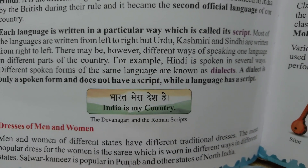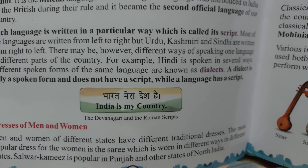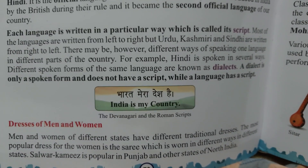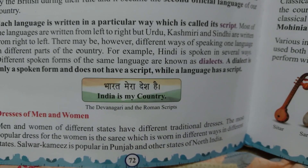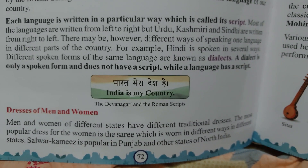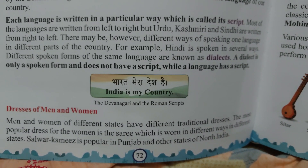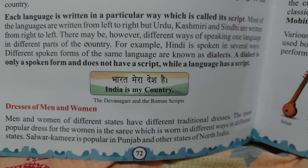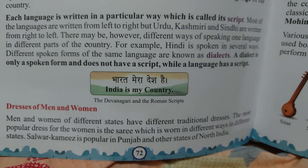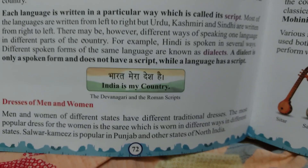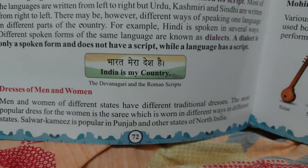There may be different ways of speaking one language in different parts of the country. For example, Hindi is spoken in several ways. Different spoken forms of the same language are known as dialects. A dialect is only a spoken form and does not have a script, while the language has a script.